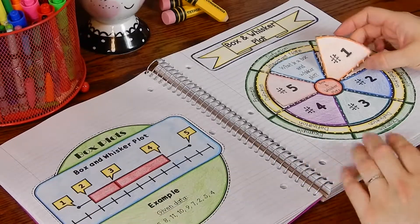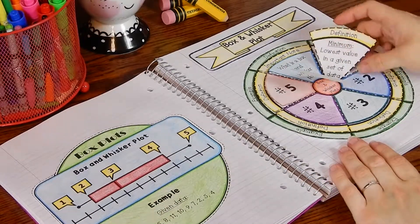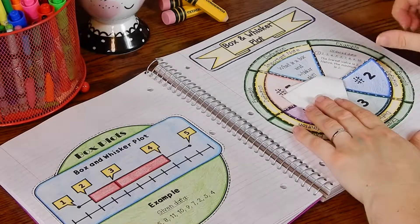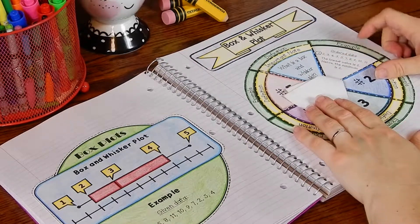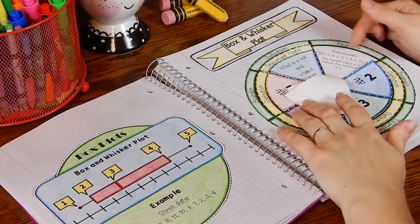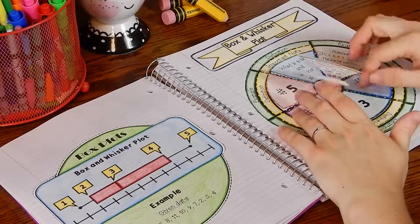Number one is the minimum and it gives you the definition. Then you have the example from here and students will put it in order and then determine what the minimum is.